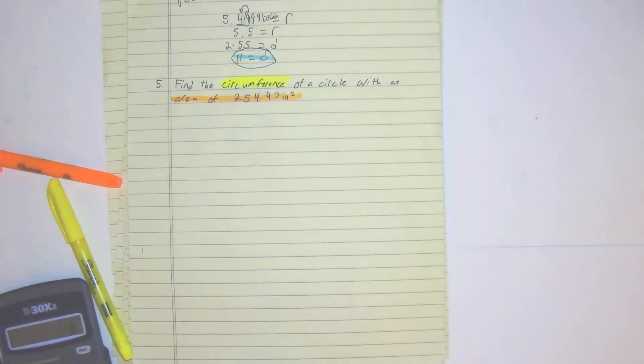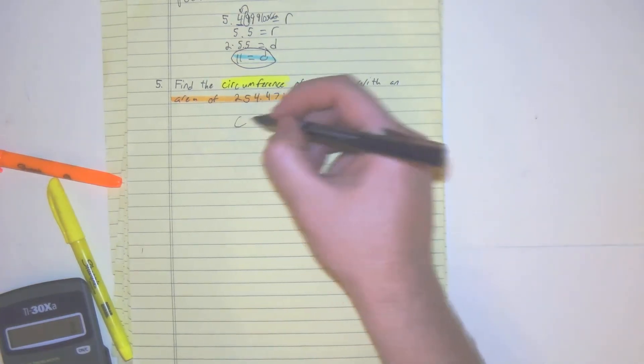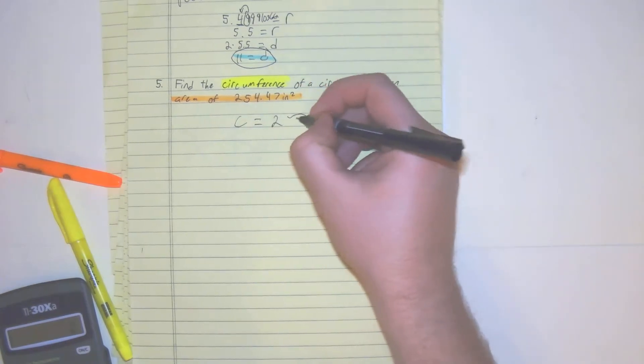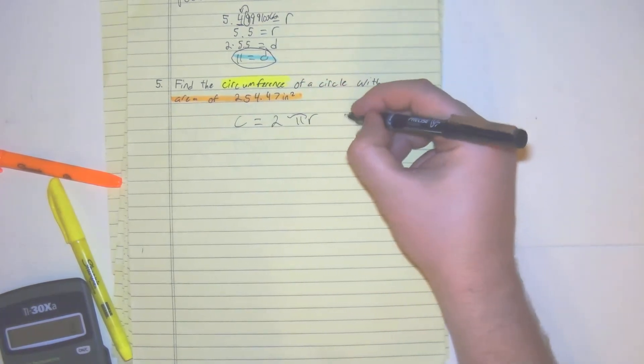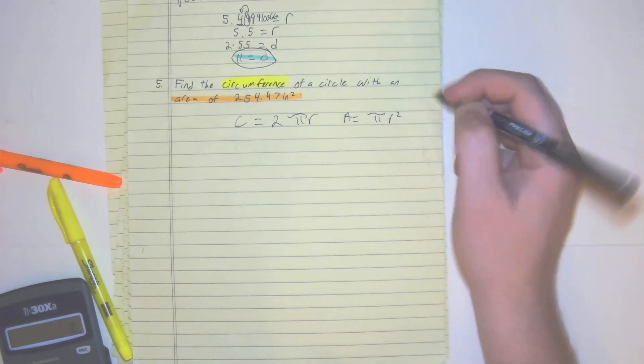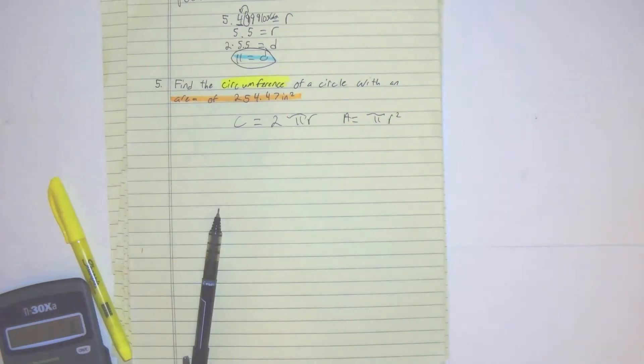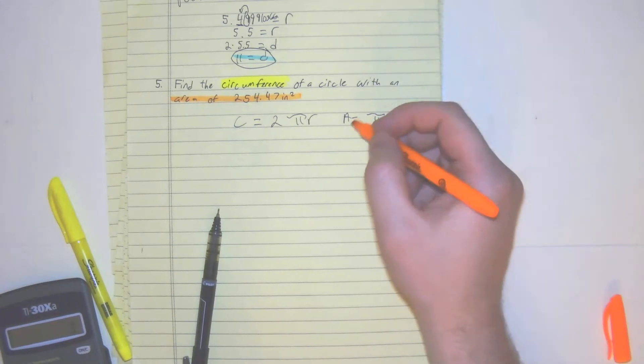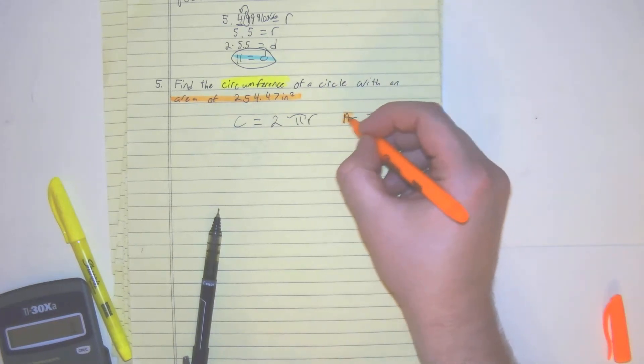So right here, we know what we have to do. So what we have to do is c is equal to 2 pi r and area is equal to pi r squared. And since we are given the area, we are going to plug it into here.